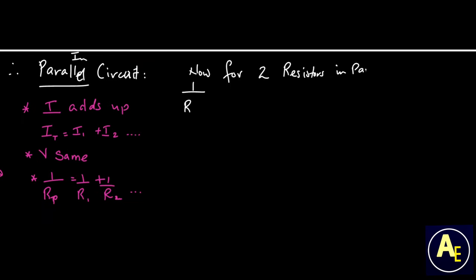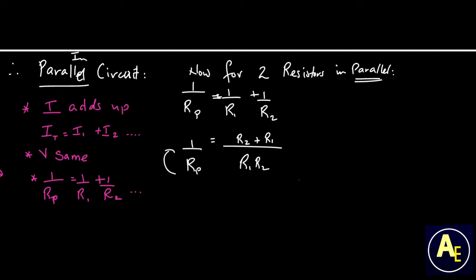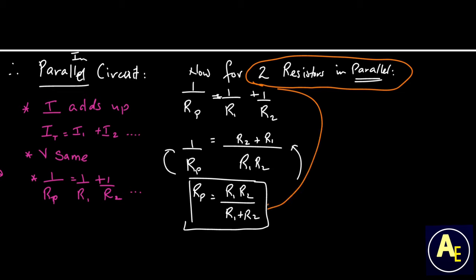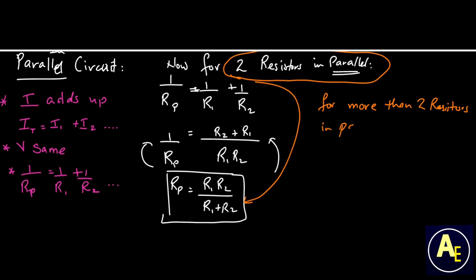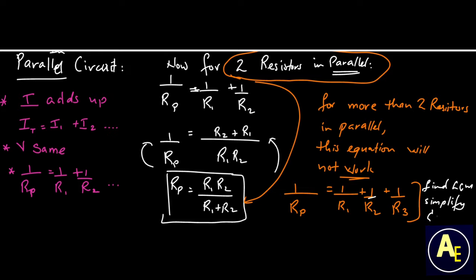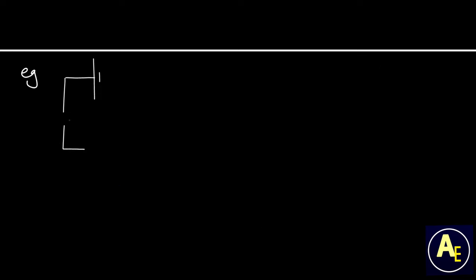In a parallel circuit: current adds up, voltage is the same, and resistance follows the reciprocal formula. However, for two resistors specifically, using the concept of LCM, we obtain a simplified formula: R_p = (R1 × R2) / (R1 + R2) — the product divided by the sum. This only works for exactly two resistors in parallel; for more than two, the LCM and products change, so this simplified formula will not give the correct answer.